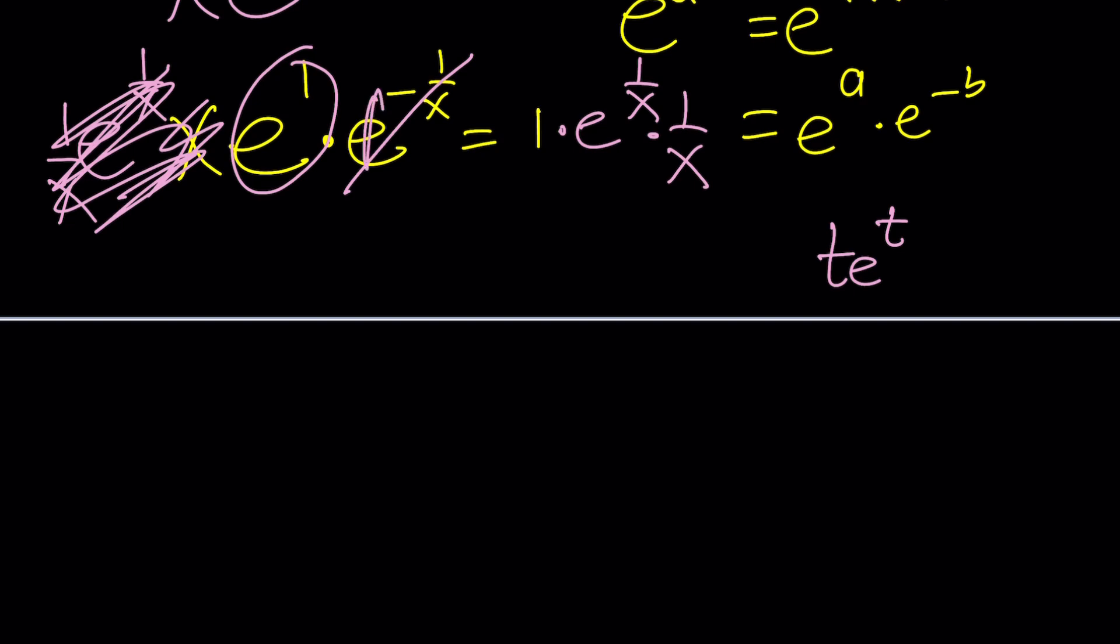Now we ended up with a constant, but it's on the positive side. So here we have the following. 1 over x from here times e to the power 1 over x equals 1. Ta-da! This is what we were looking for.